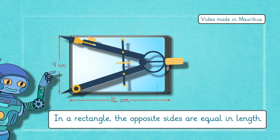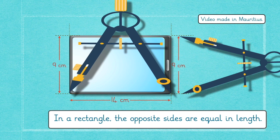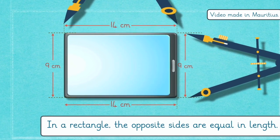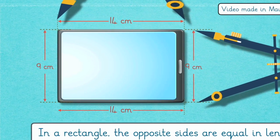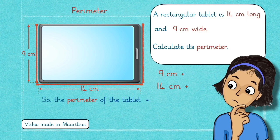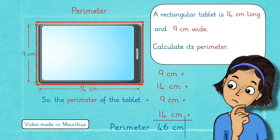But remember, in a rectangle, the opposite sides are equal in length. Yes, you're right. The same applies to 14 cm. So, we continue adding the other two sides. So, plus 9 cm plus 14 cm. And the perimeter will be 46 cm.